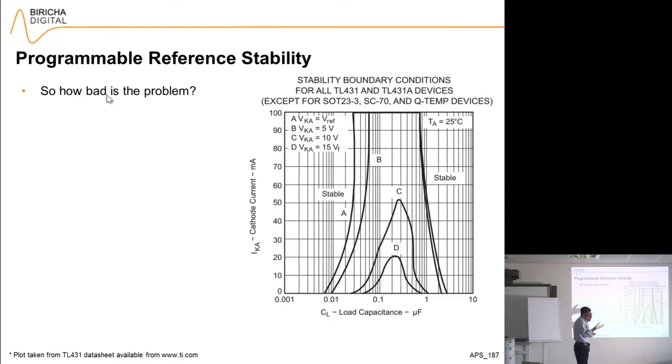The good news is that there are plots in the datasheet of all of these devices that actually show you the stable region and the unstable region. For example, this plot is taken from the datasheet of TL431 available from TI, and it shows the stable region here and here, and the unstable region is in the middle. So how bad is the problem?